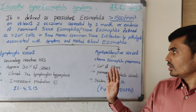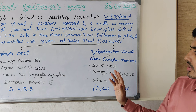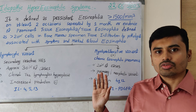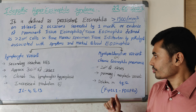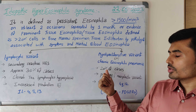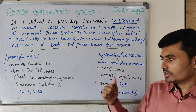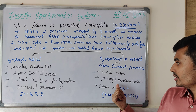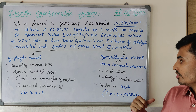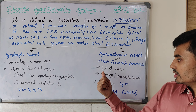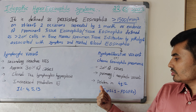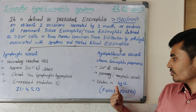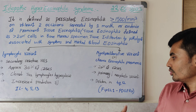The myeloproliferative variant, also called chronic eosinophilic leukemia, accounts for approximately 20% of cases. It is a primary or neoplastic variant and occurs because of a deletion at 4q12.